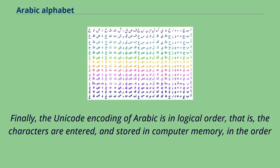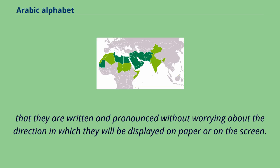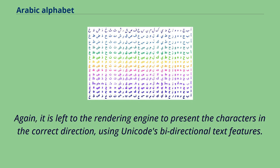The Unicode encoding of Arabic is in logical order — that is, the characters are entered and stored in computer memory in the order that they are written and pronounced, without worrying about the direction in which they will be displayed on paper or on screen. It is left to the rendering engine to present the characters in the correct direction, using Unicode's bidirectional text features.